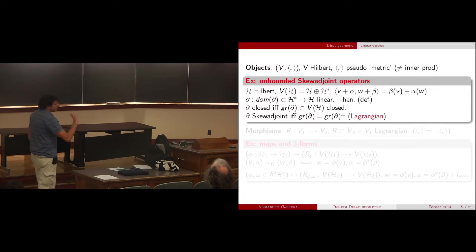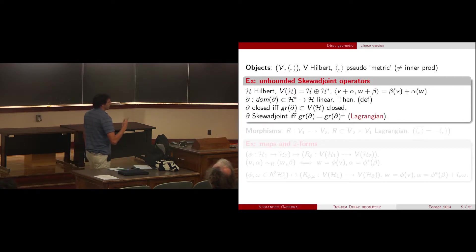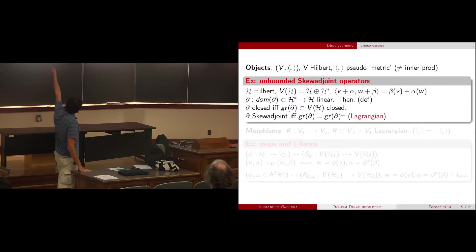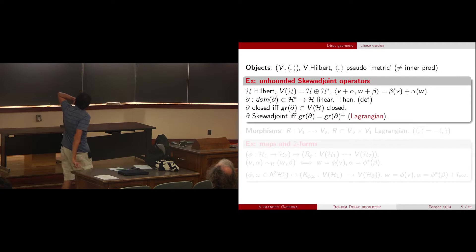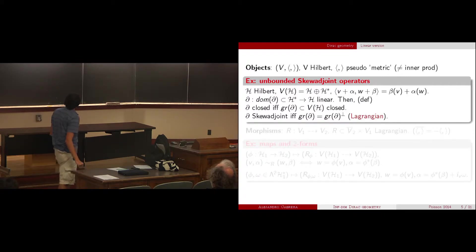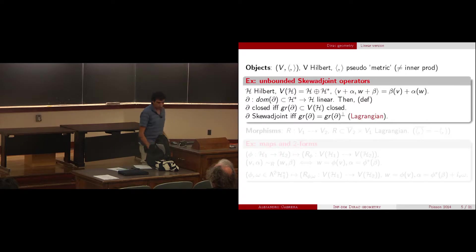This shift of perspective from functions to relations is used in functional analysis. For example, if you want to speak about when an operator is skew-adjoint, you can think of the graph as a subspace of this double construction, and it will be skew-adjoint if and only if it is Lagrangian — meaning it equals its orthogonal complement.